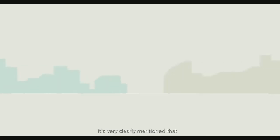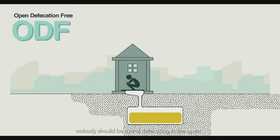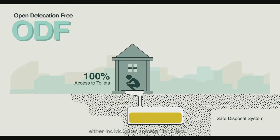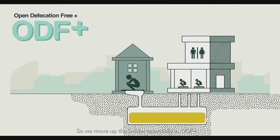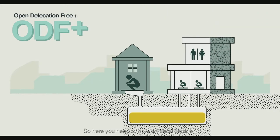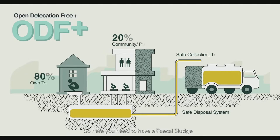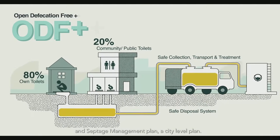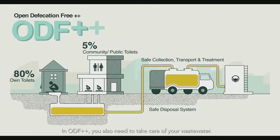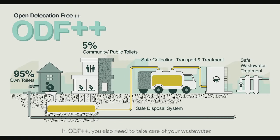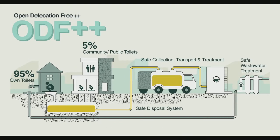ODF, or open defecation free, means nobody should be found defecating in the open and everybody should have access to toilets — either individual or community. Moving up the ladder to ODF plus, you need to have a fecal sludge and septage management plan at the city level. In ODF plus plus, you also need to take care of wastewater, which should be disposed of only after treatment.